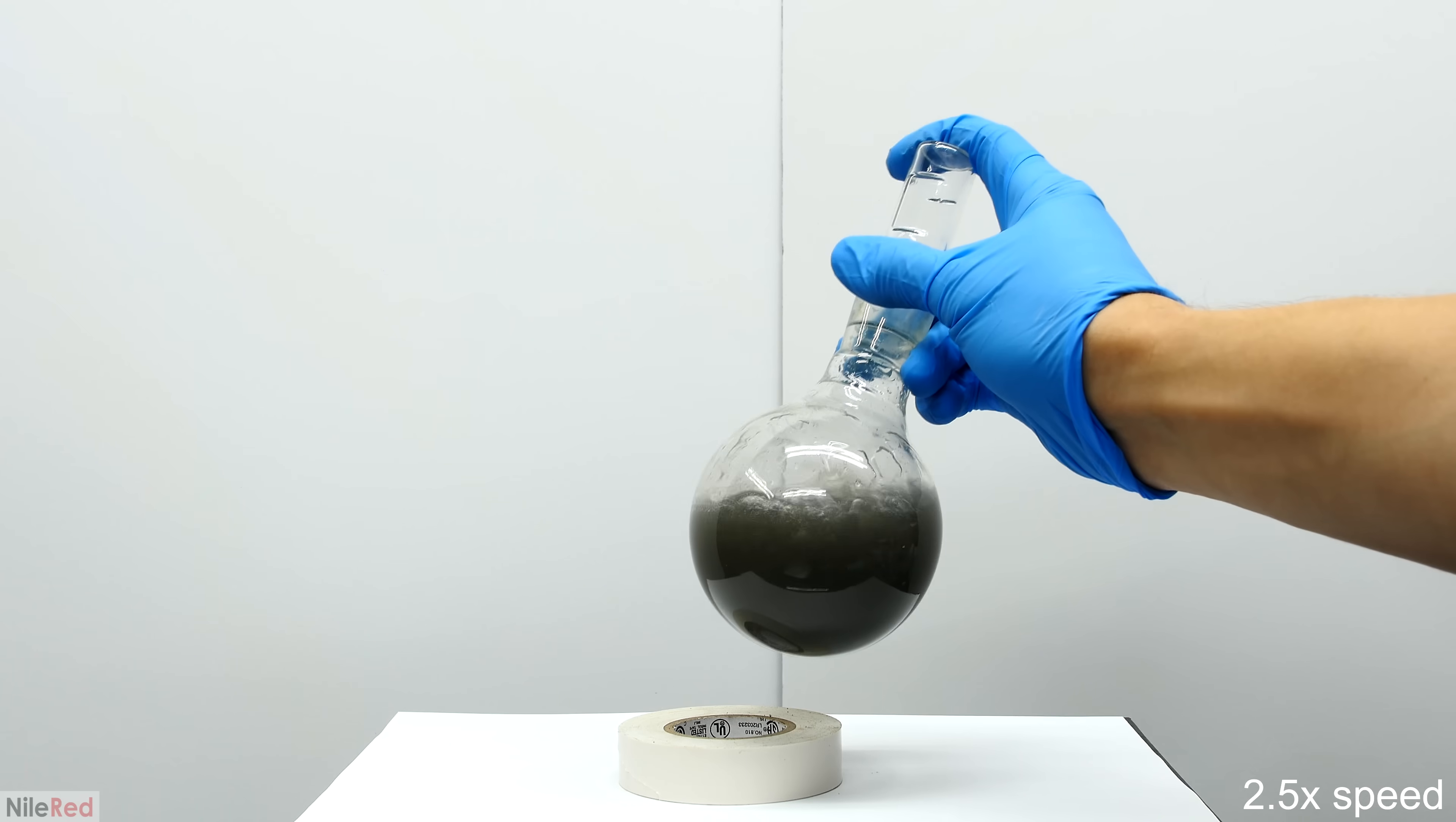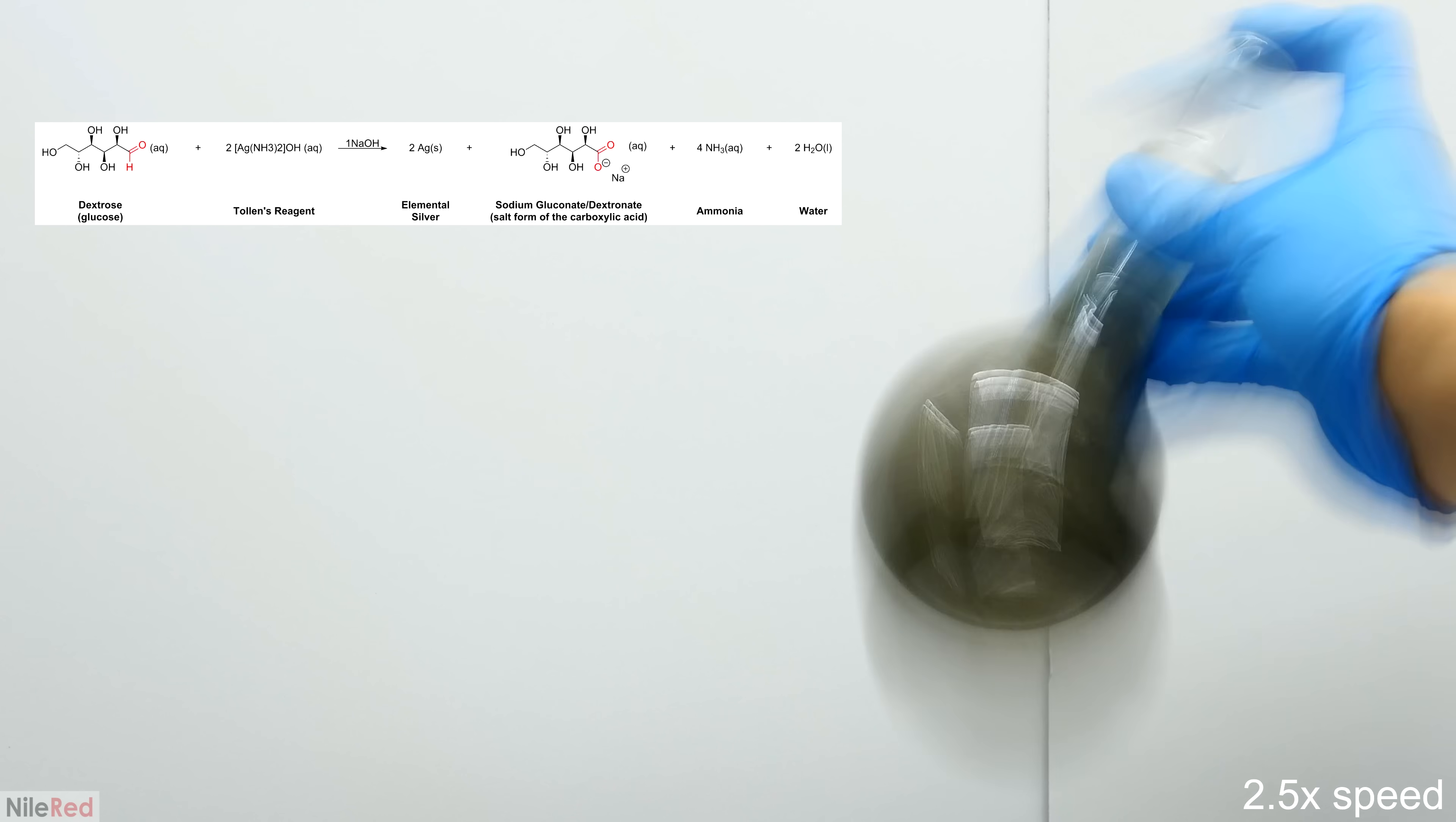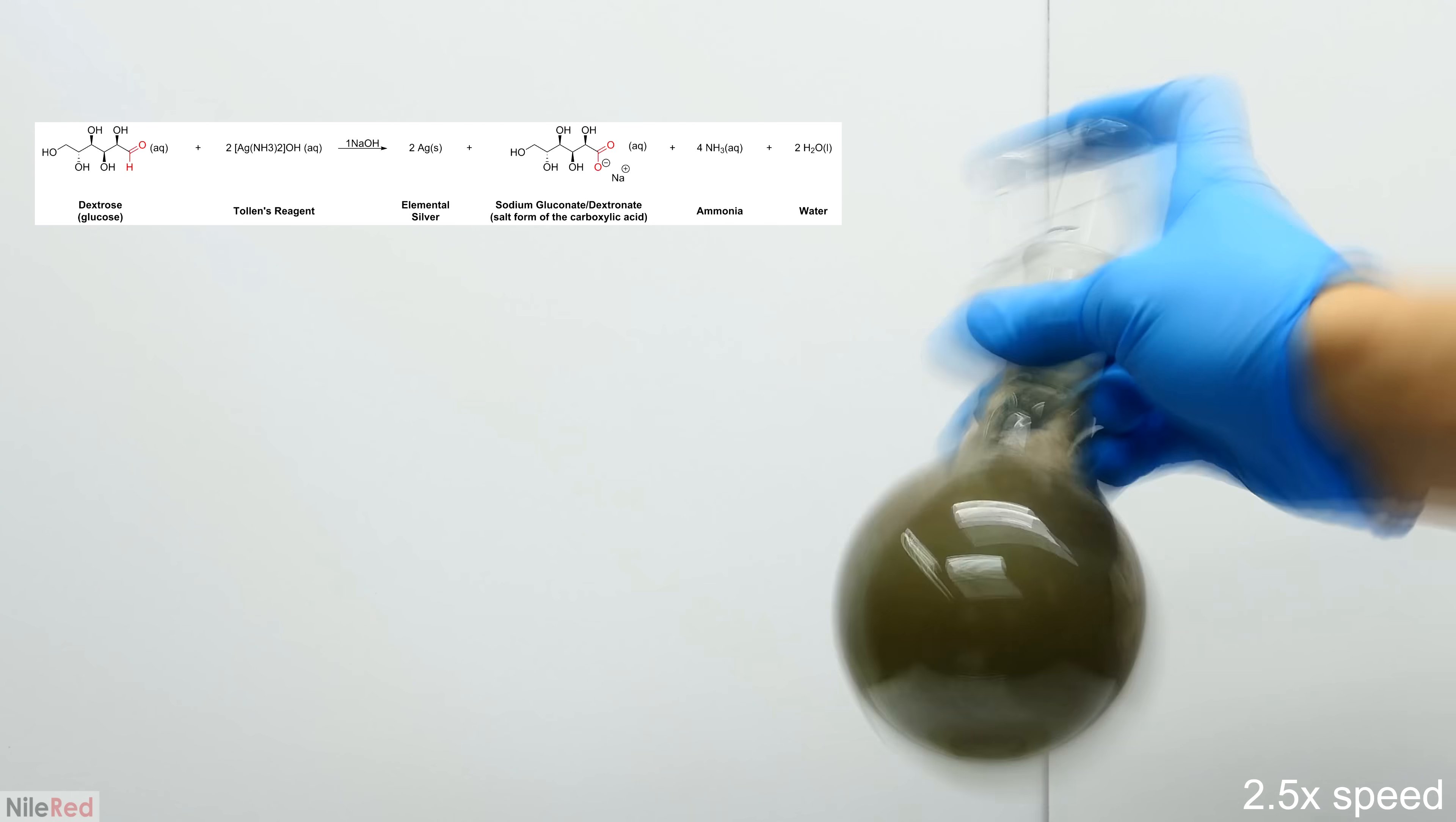Now we should talk about what exactly is going on here. The dextrose that I added is known as a reducing sugar, and it contains a group known as an aldehyde. Then we have the Tollens reagent, which is actually an oxidizing agent. When the dextrose and the Tollens reagent are mixed, our sugar will be oxidized and our Tollens reagent will be reduced.